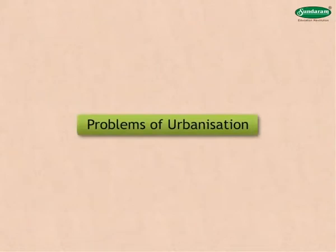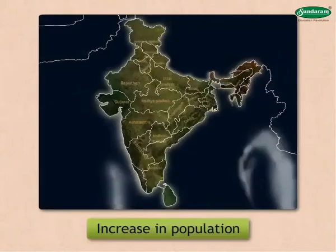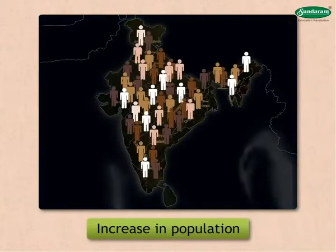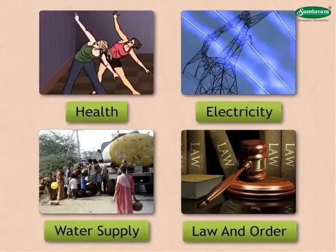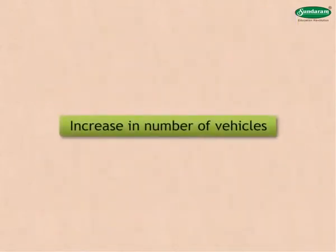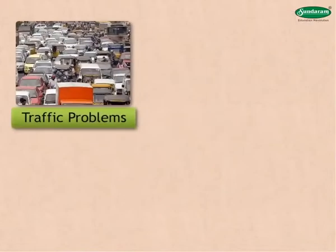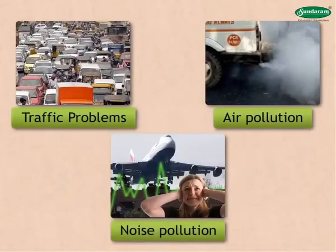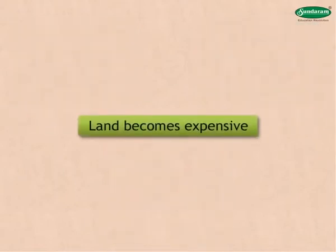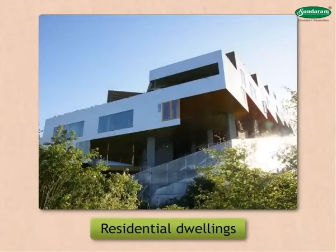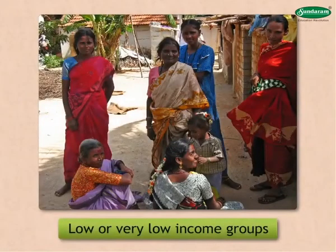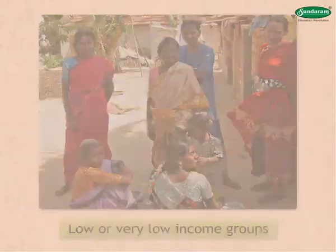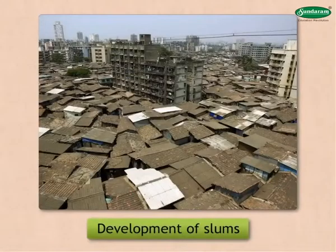Problems of urbanization include: due to the increase in population, stress on public facilities like health, electricity, water supply, and law and order machinery increases; increase in the number of vehicles leads to traffic problems, air and noise pollution; land becomes expensive due to scarcity of residential dwellings; and a large section of migrants coming to urban areas belongs to low or very low income groups, giving rise to the development of slums in large urban centres.